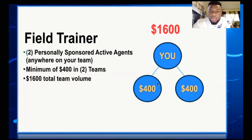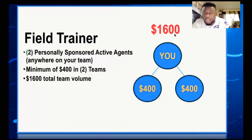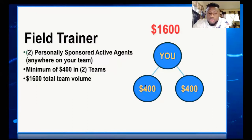So what you need: sign 2 people directly below you — 1, 2 — then reach 1600 in volume. You get 1600 because the people you signed can sign other agents or clients, and their volume adds up. Very simple — when you add the total volume together and it reaches 1600, you get the promotion.